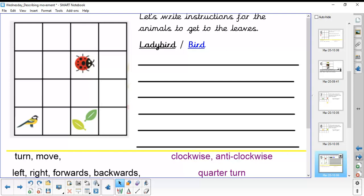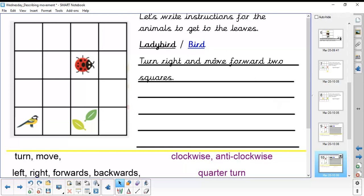Okay, so let's have now a quick look at what we could write. It says, turn right and move forward two squares. Okay, so the ladybird turns to the right and moves forwards. One, two squares. Excellent. It has now found the leaves. But could we improve that sentence using these key words?